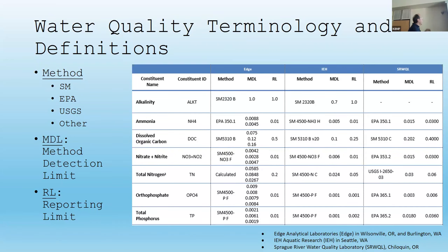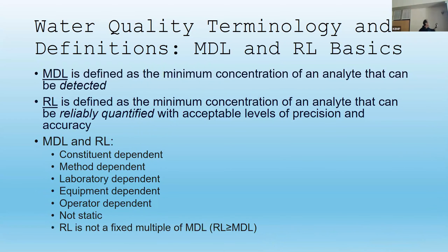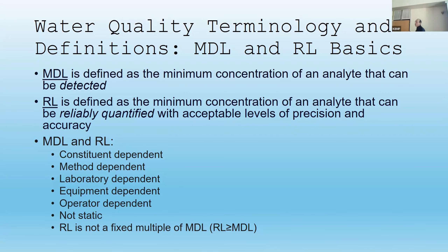Again, MDL — I can find it, I can detect it, but I'm not sure I can reproduce it. RL: reliably quantified with some acceptable level of accuracy and precision. These are not static — it's not a fixed multiple of MDL. So if I have a method detection limit of 0.01 and a reporting limit at a lab of 0.03, that's a three-times multiplier — but that's not always the case for that constituent or that laboratory.